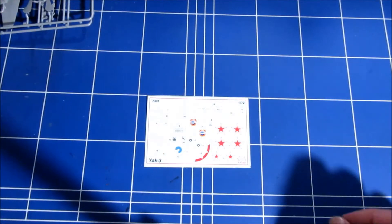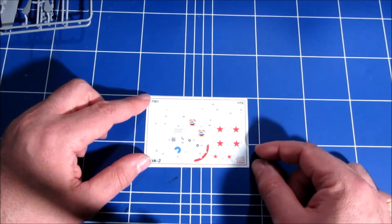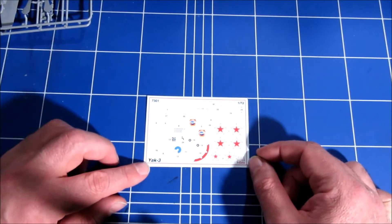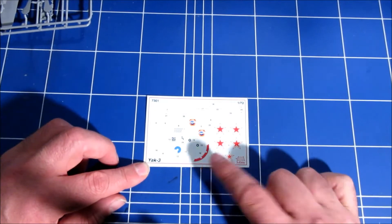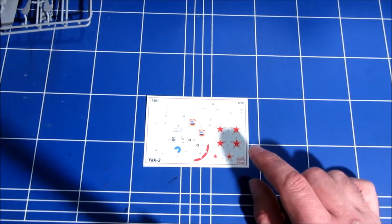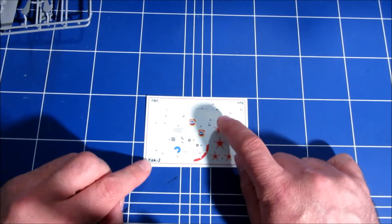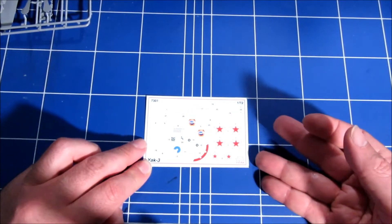Here we have the decals for two versions. One is a Normandy Niemen version with the red, white and blue spinner. I believe it's the number 6, white 6. It's the Normandy Niemen version. And there's also a white 15.